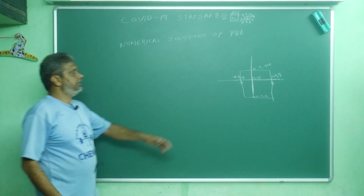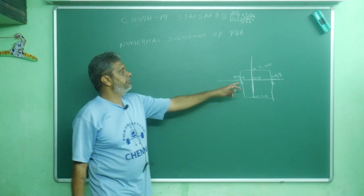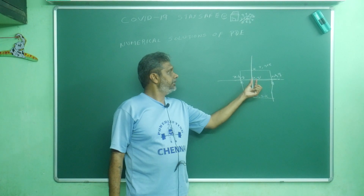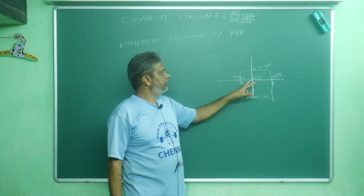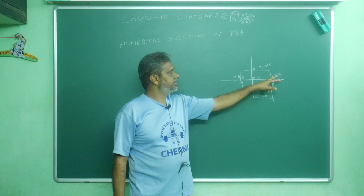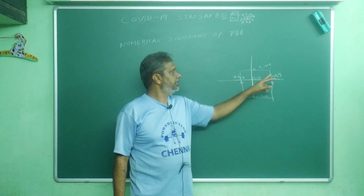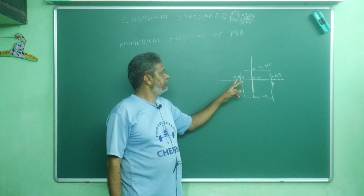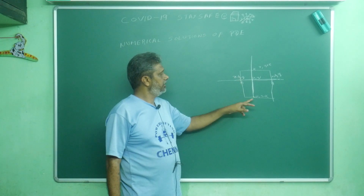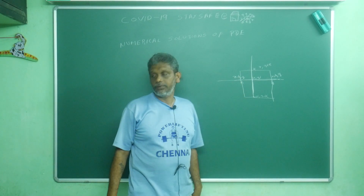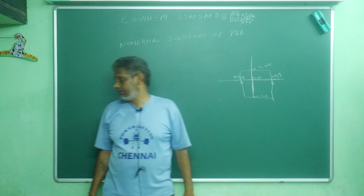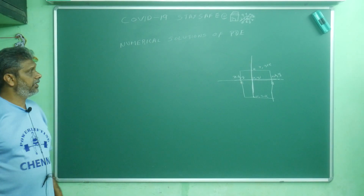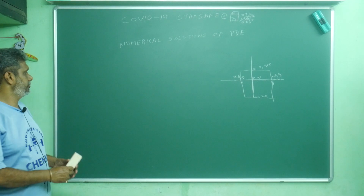If you take the central point (x, y) with increment h in x and increment k in y, the surrounding grid points are: (x+h, y) to the right, (x-h, y) to the left, (x, y+k) above, and (x, y-k) below. Now we will see the difference formulas.